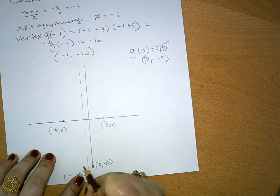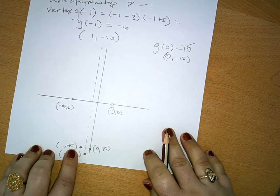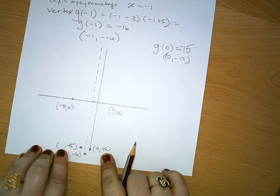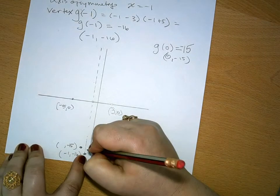Now, again, we want to use the axis of symmetry to find the other coordinate. So we have another coordinate that has an output of negative 15, the same as the 0 here, but that's going to be the same distance from the axis of symmetry on the other side.